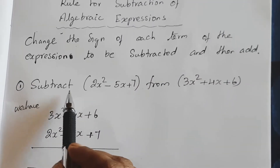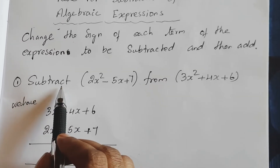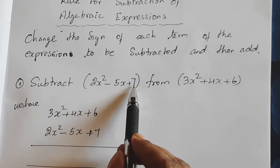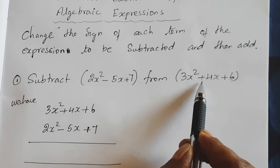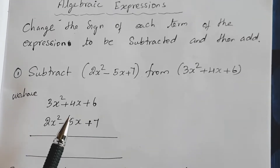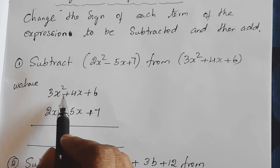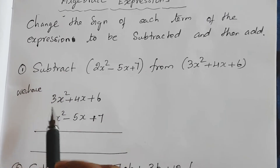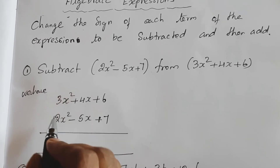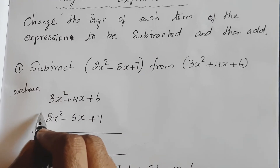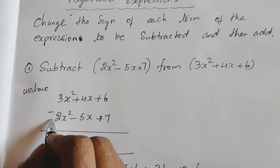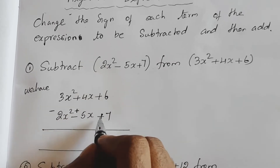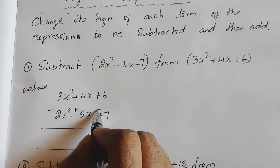We will solve the first question: subtract 2x square minus 5x plus 7 from 3x square plus 4x plus 6. We have 3x square plus 4x plus 6. By the rule, change the sign of each term of the expression being subtracted: positive 2x square becomes negative, negative 5x becomes positive, positive 7 becomes negative.